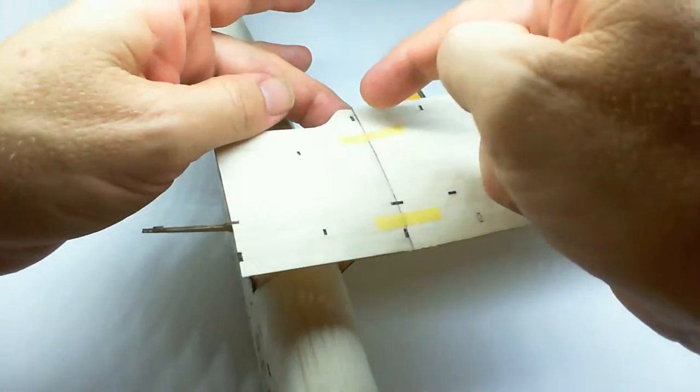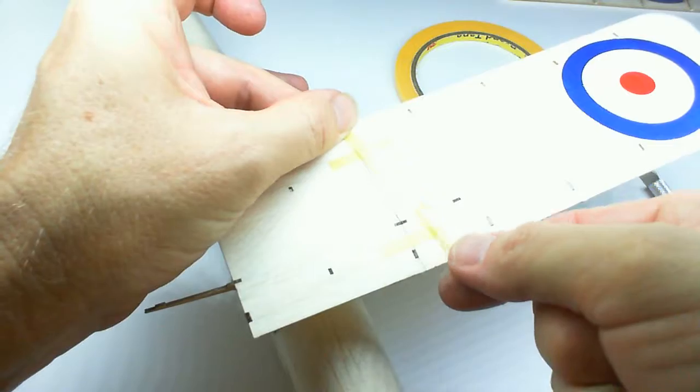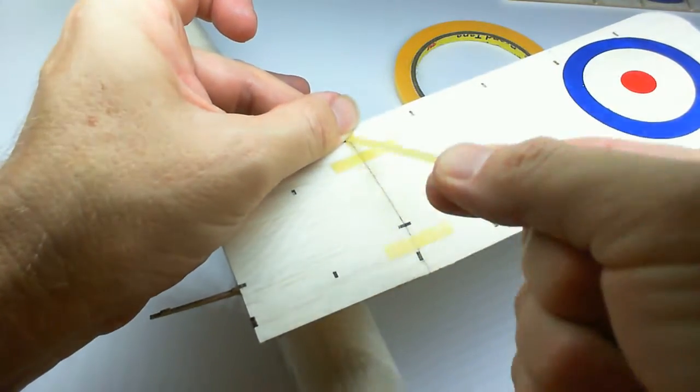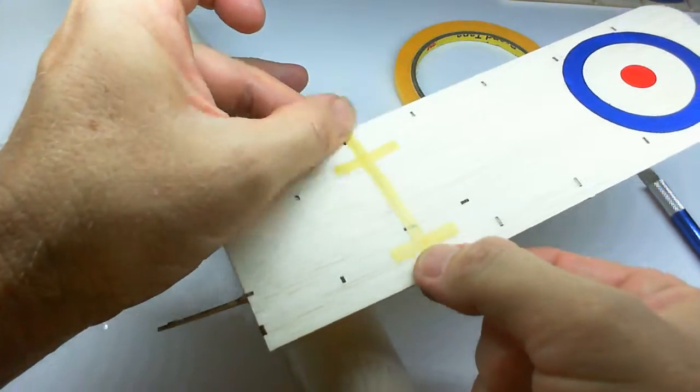You can see it's not quite level there at the back, so this piece here just keeps the two pieces of wood level and lined up with each other. Okay, like that.